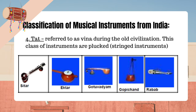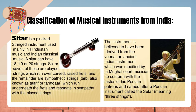4. Tat — referred to as Veena during the old civilization. Instruments in this class are plucked stringed instruments. Sitar is a plucked stringed instrument used mainly in Hindustani music and Indian classical music. A sitar can have 18, 19 or 20 strings. Six or seven of these are played strings which run over curved raised frets, and the remainder are sympathetic strings (Tarb), also known as Tarifdar, which run underneath the frets and resonate in sympathy with the played strings. The instrument is believed to have been derived from the Veena, modified by a Mughal court musician, and named after a Persian instrument called the Setar, meaning three strings.